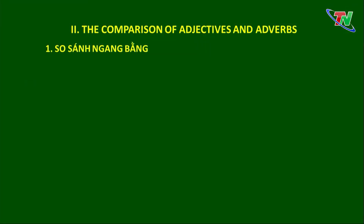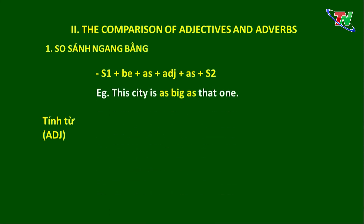Trước hết, chúng ta cùng ôn tập lại so sánh ngang bằng của tính từ. Với tính từ, chúng ta đã biết có dạng tính từ ngắn và tính từ dài. Ở so sánh ngang bằng, tính từ ngắn và tính từ dài chúng ta không thay đổi khi sử dụng trong câu so sánh. Cấu trúc: Chủ ngữ 1 + be + as + tính từ + as + chủ ngữ 2. Ví dụ: cô giáo sử dụng tính từ 'big' là tính từ ngắn. Ví dụ thứ 2, cô sử dụng tính từ 'beautiful' là tính từ dài: She is as beautiful as her sister.